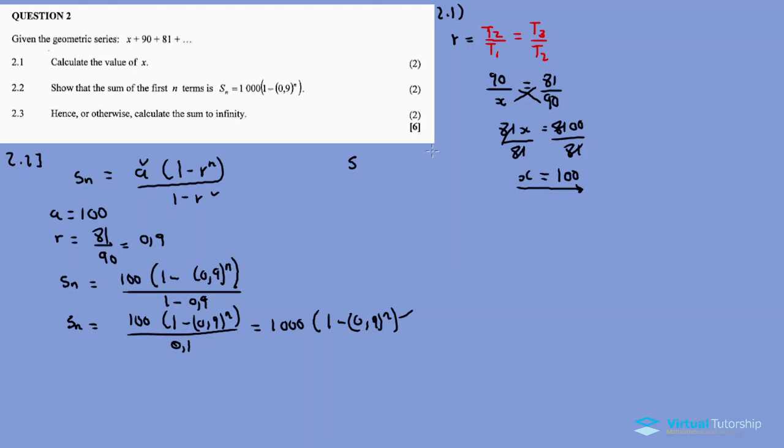2.3 says hence or otherwise calculate the sum to infinity. S infinity equals a divided by 1 minus r. That's 100 divided by 1 minus 0.9, which is 100 divided by 0.1, equals 1000. This is your sum to infinity.